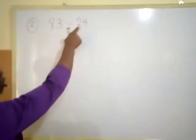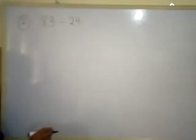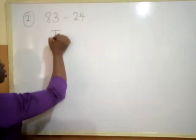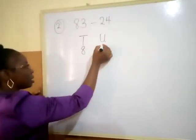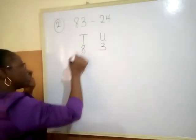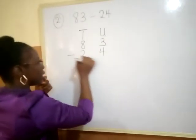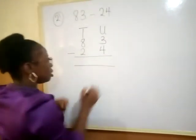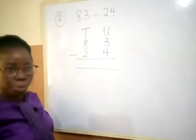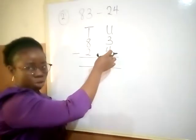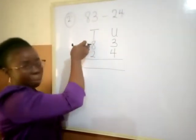Example two. I have 83 minus 24. I told you before to arrange under tens and units. In 83, I have eight tens, three units. Minus 24 is two tens, four units — two will go under tens and four will go under units. Then I start doing the subtraction. Now, three take away four — it is impossible. Why? Three is smaller than four. So what do we need to do? We'll borrow. We'll go to tens and borrow from eight.